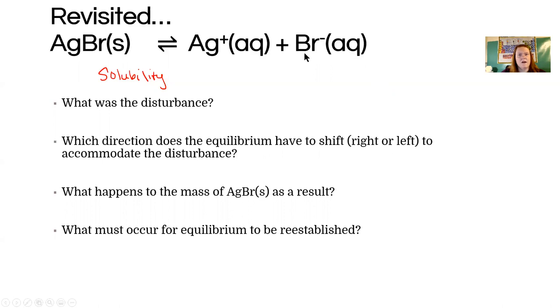If, for instance, I am doing the qual scheme and I want to isolate as much silver precipitate as I can, I need to manipulate this reaction to do that. This is what we want to get, which means I have to decrease the total amount of Ag+ that's in the solution.